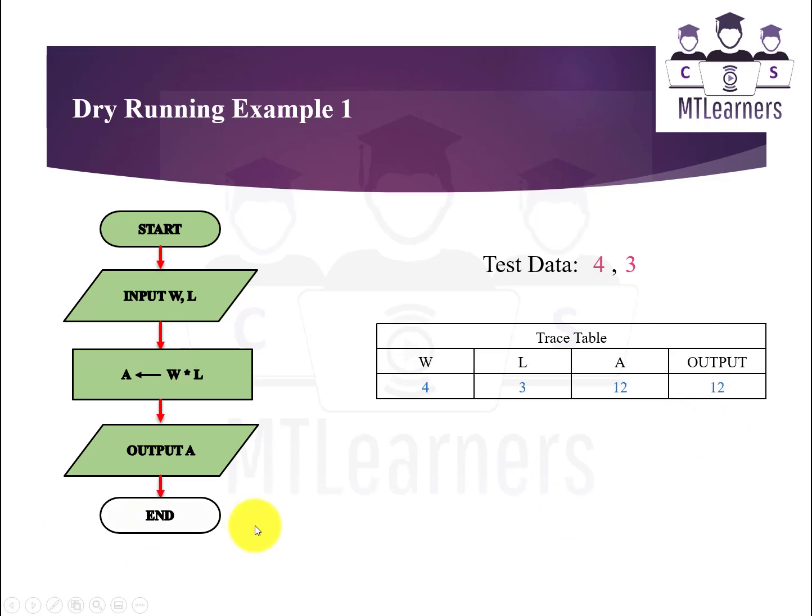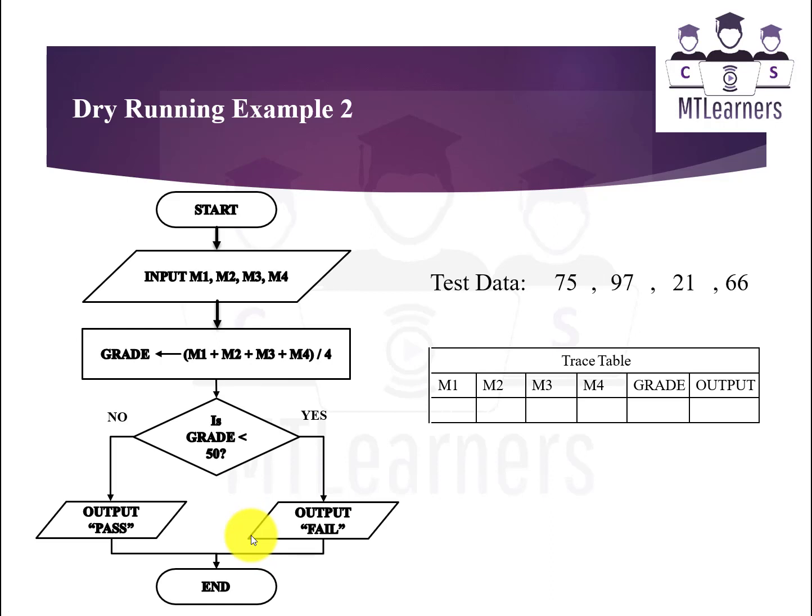Now there is another example of dry running in which a somewhat complex flowchart is shown in which decision making is also performed. So these are the test values. The trace table has input values M1, M2, M3, M4, then grade, and then output. So let's start it.